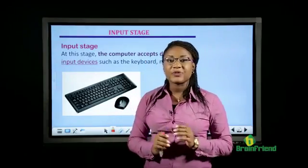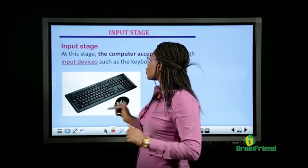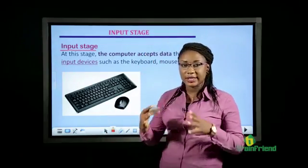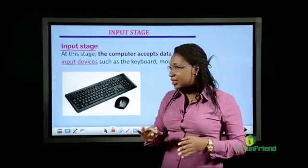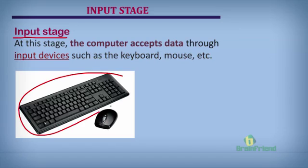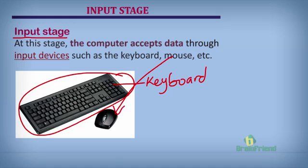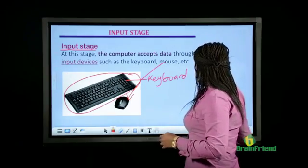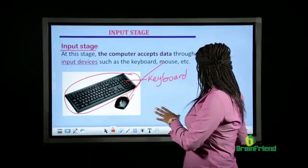After collating and sorting your data, the next stage is to input the data — we've come to the input stage. At this stage, the computer accepts the data you've gathered and sorted using input devices. Input devices are used to enter data into the computer; the keyboard and the mouse are examples.